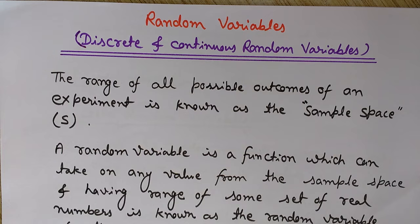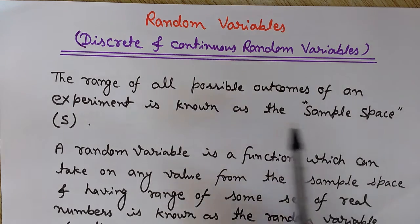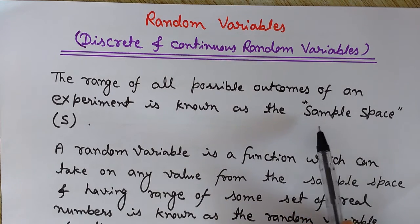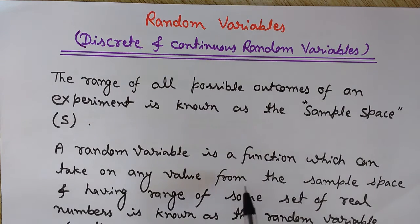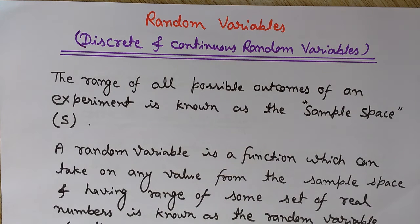Now let me give you the definition of random variable. A random variable is a function which can take on any value from the sample space. The sample space contains all the possible outcomes of that experiment, as we have seen in the coin example. This function takes values that are part of the sample space and maps them to a range of real numbers — this is known as the random variable of the experiment.